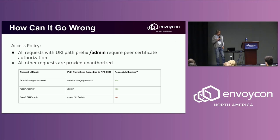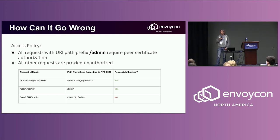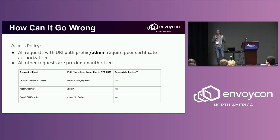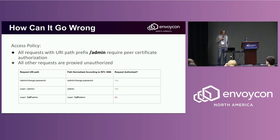Here are some examples. A request to the /admin/change endpoint — path normalization has no work to do here. It's unchanged, we find the admin prefix, and the request undergoes the authorization check.